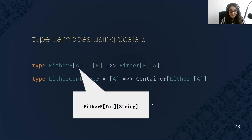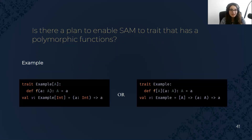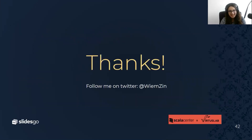Type lambdas in Scala 3 make our code easier and more readable. Before I finish, I would like to ask Martin Odersky about polymorphic function types in Scala 3 — I really like this feature. It sounds similar to some syntax, and I wonder if there is a plan to enable some trait that has polymorphic functions. Thank you all for your attention, and you can follow me on Twitter if you have any questions or feedback.